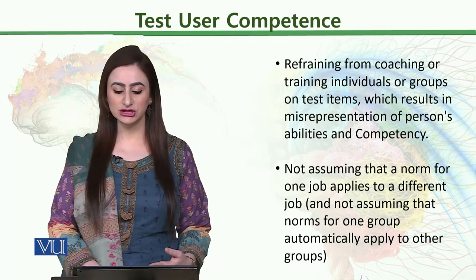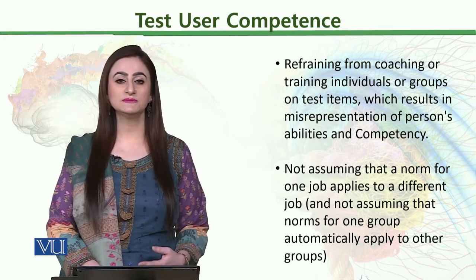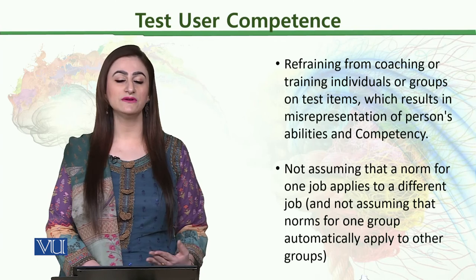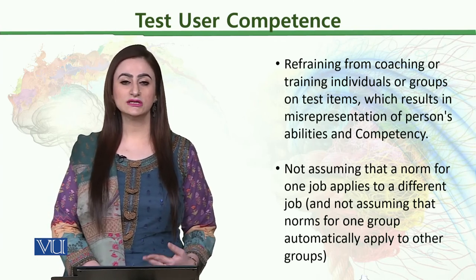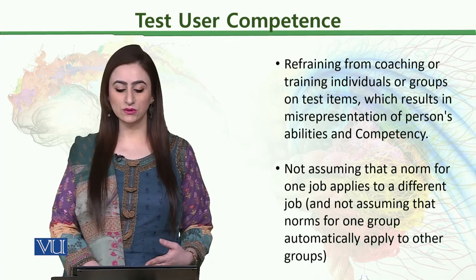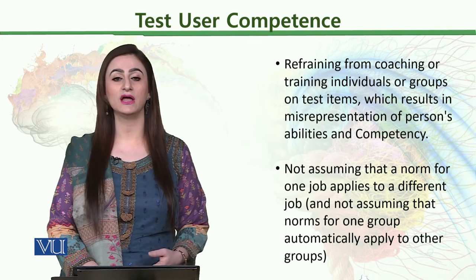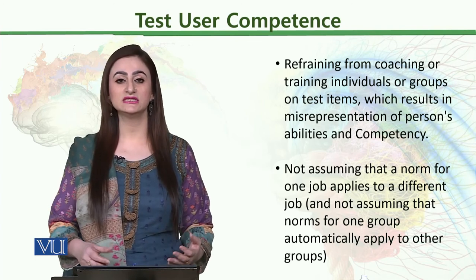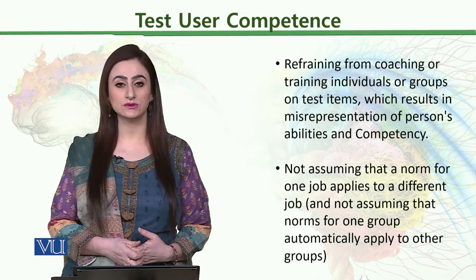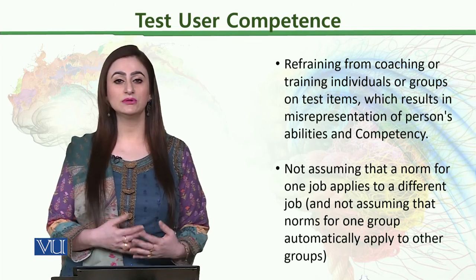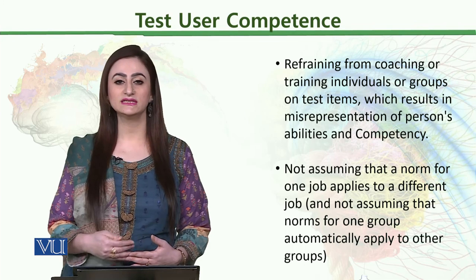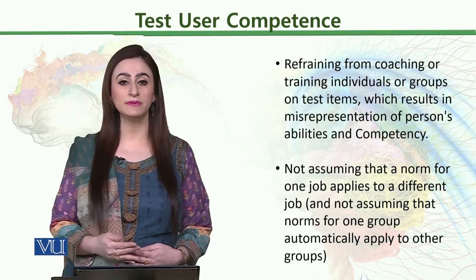With respect to misinterpretation of a person's ability and competence, if a specific item is assigned a different score, one is not supposed to go beyond that. Not assuming that a norm for one job applies to a different job, and not assuming that norms for one group automatically apply to other groups, is very important. For instance, when discussing the Rosenberg Self-Esteem Scale, the overall average value for Pakistan, India, and South Asia is lesser compared to developed and western countries.